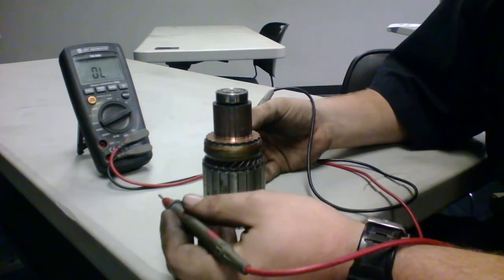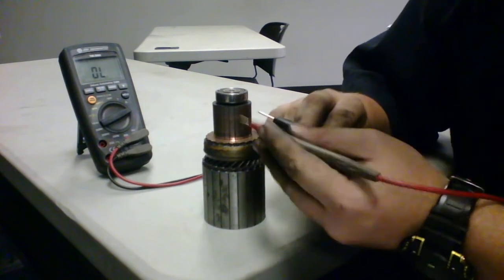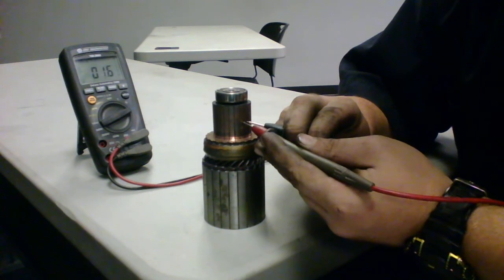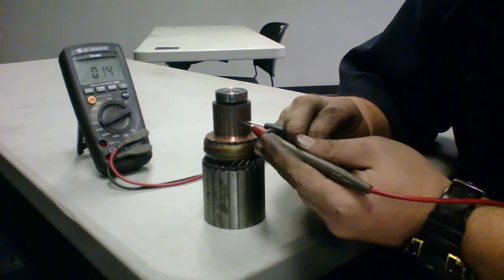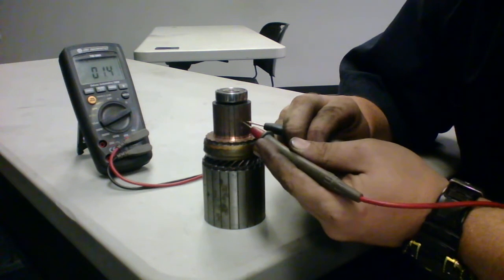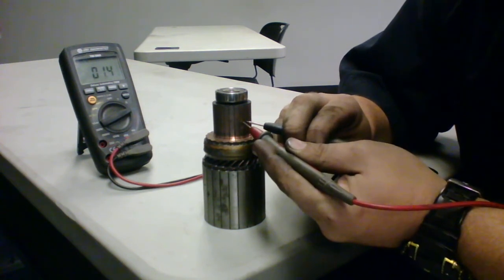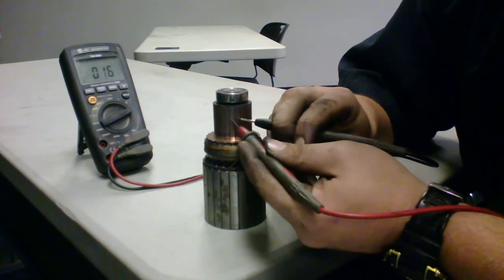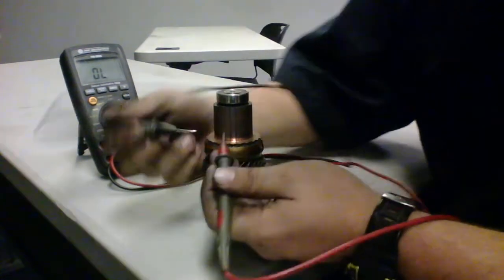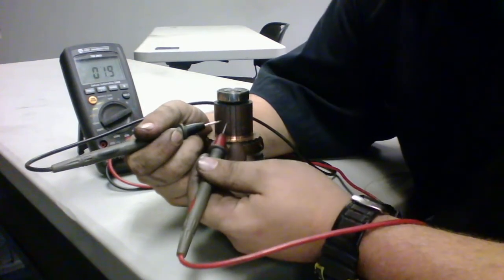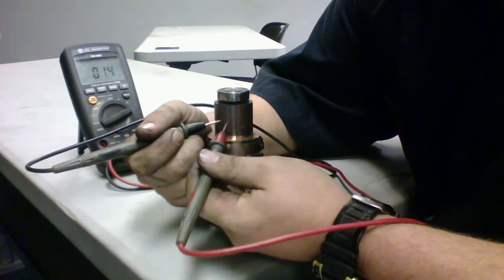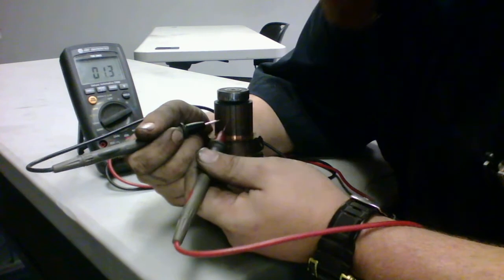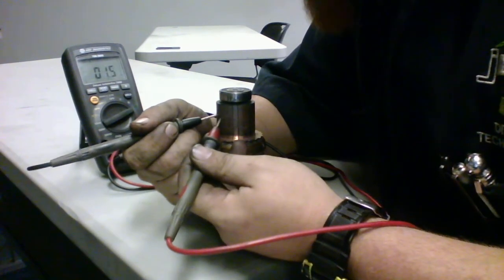And now we're going to run a basic continuity test by running parallel side by side. Alright, so we got 1.3, 1.4. We're going to come over to the next two and do the same thing. We're going to come over to the next two and do the same thing, and again all the way around.